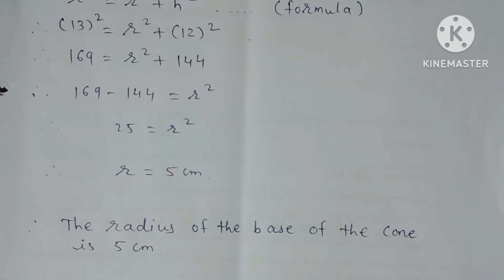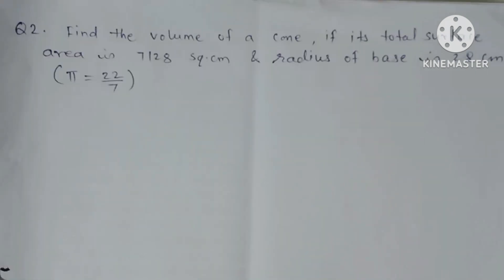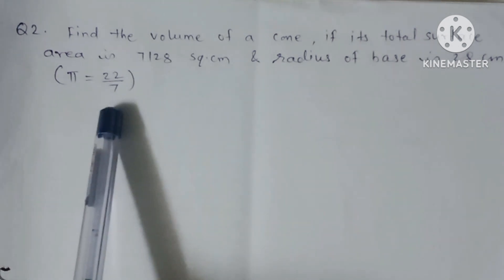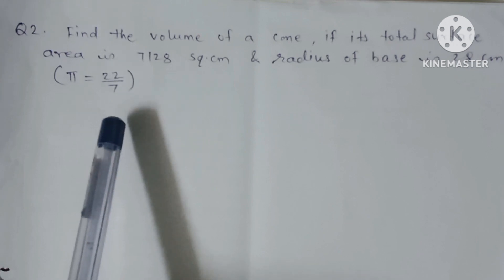Therefore, the radius of the base of the cone is 5 cm. Now Question No. 2: Find the volume of a cone if its total surface area is 7128 square centimeters and the radius of the base is 28 cm. Take the value of π = 22/7.